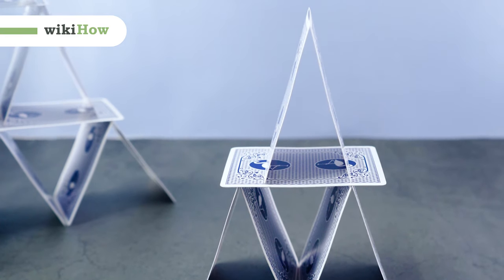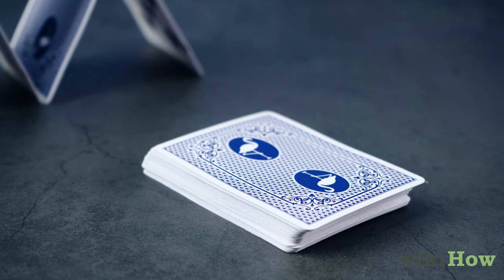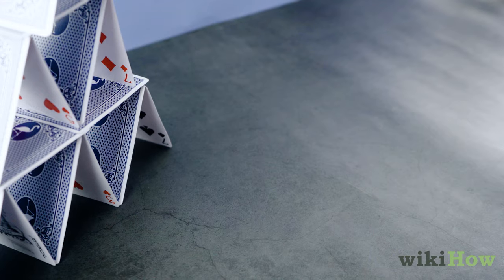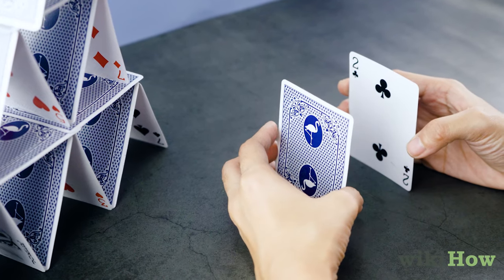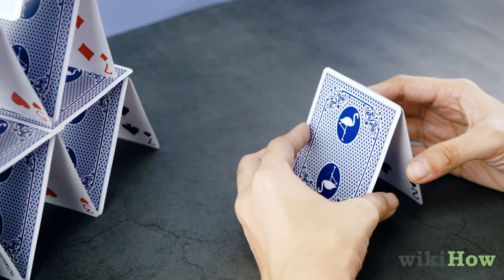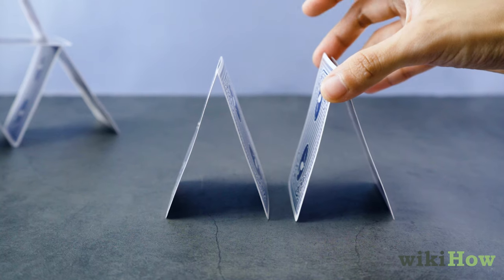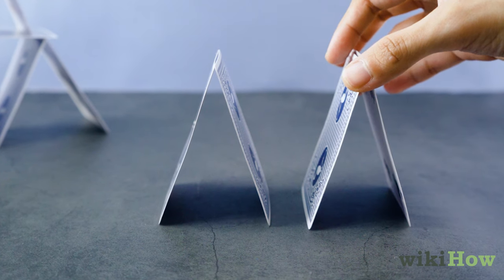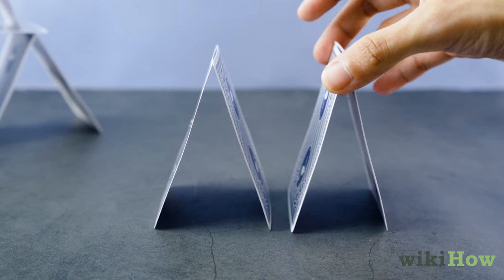To build a tower of cards, start by taking two cards from a deck of cards. Place them about two inches apart from each other. Then lean them together in an upside-down V called an apex. Construct another apex next to the first apex with about half an inch between them.